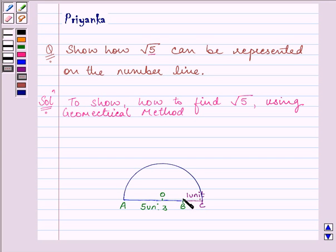So, perpendicular means the angle CBD should be equal to 90 degrees. And then, BD is equal to root 5.